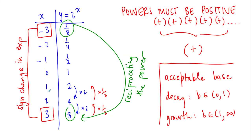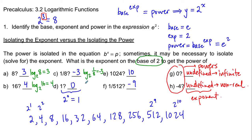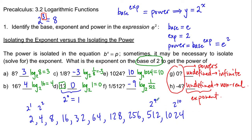Changing the sign of the exponent reciprocates the power — this comes from our table of values. If we keep decreasing our exponents, we have continual multiplication of a half, and these line up. So log base 2 of 1 equals 0, log base 2 of 1024 equals 10, and log base 2 of 1/512 equals negative 9, because to get 512 we put an exponent of 9 on base 2, and then reciprocating the power changes the sign of the exponent.